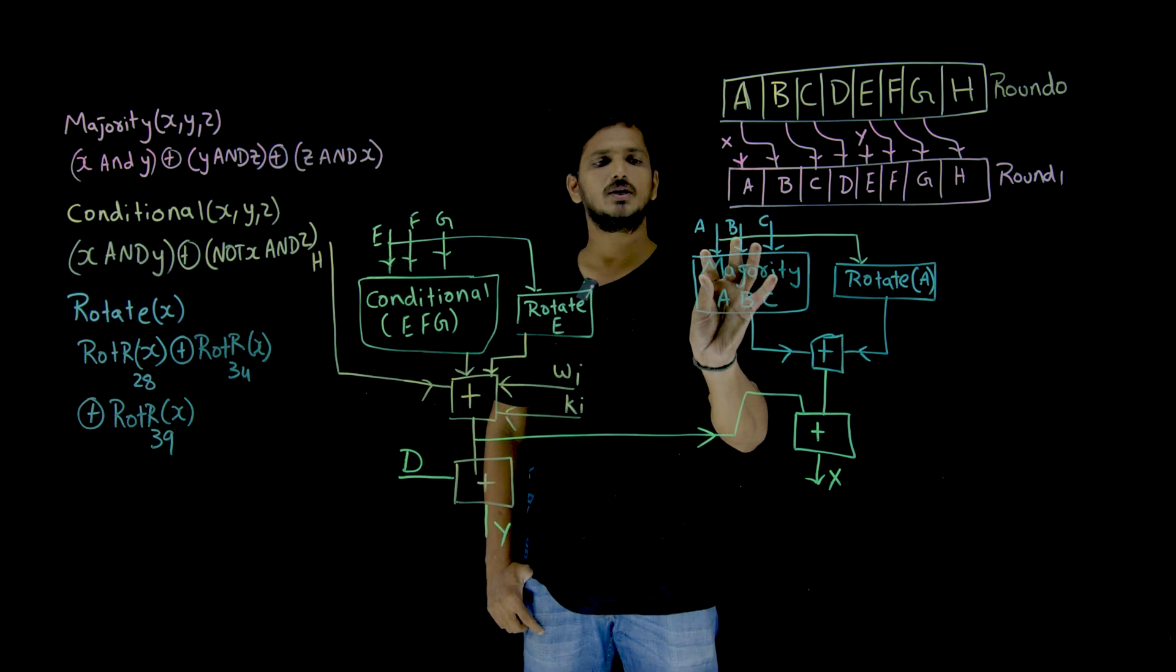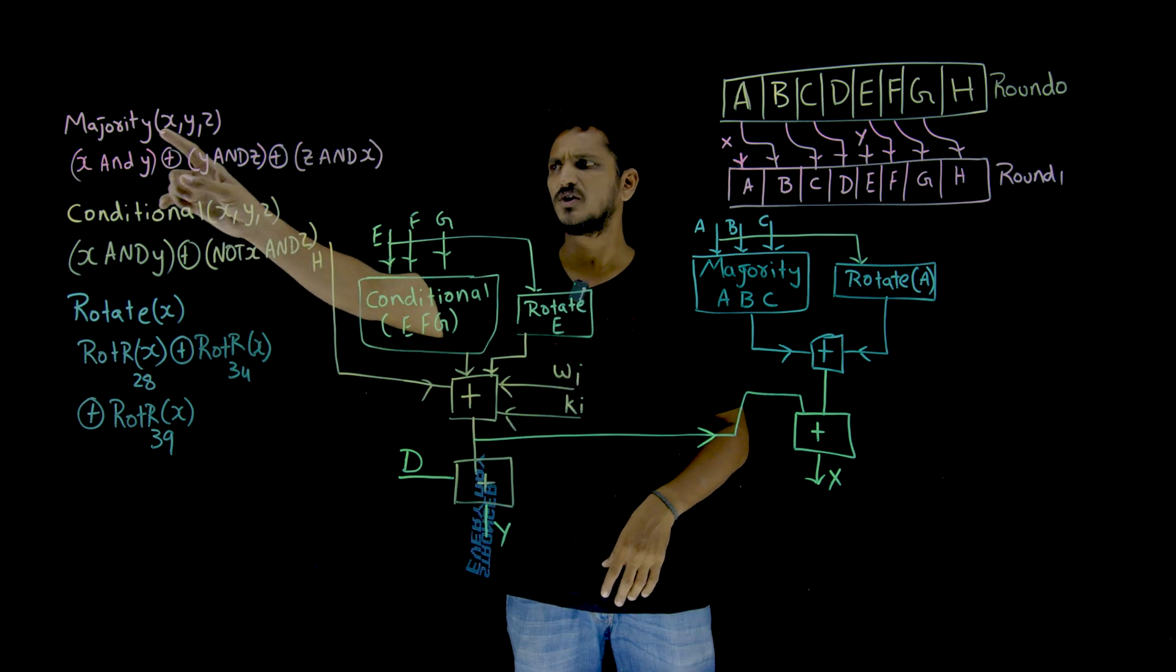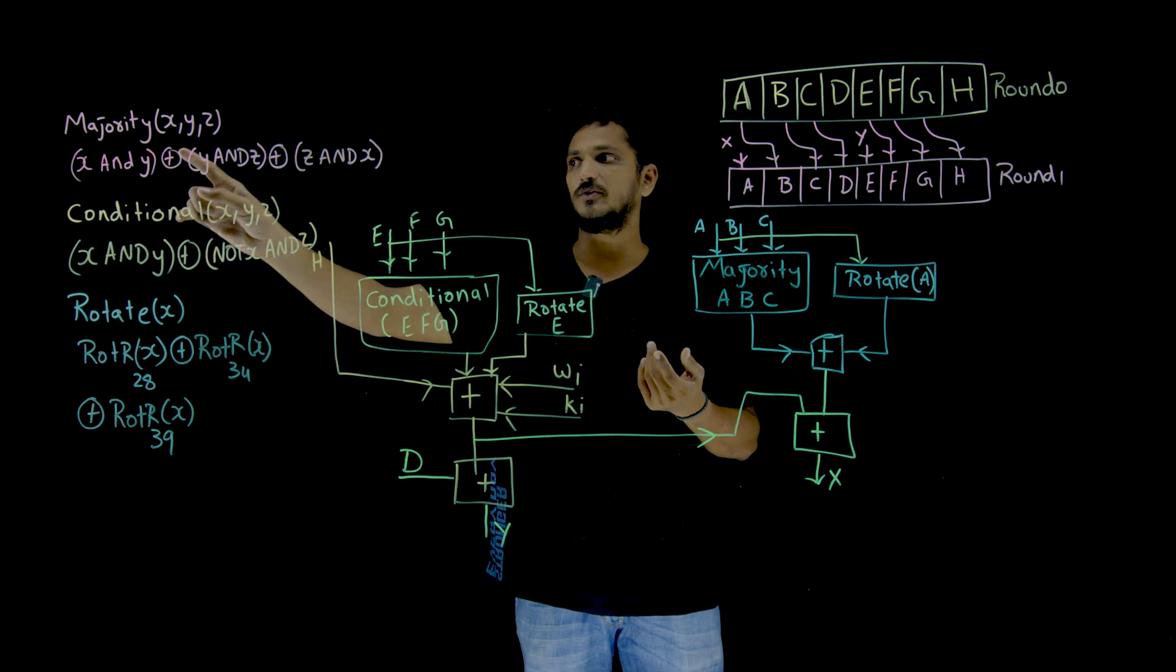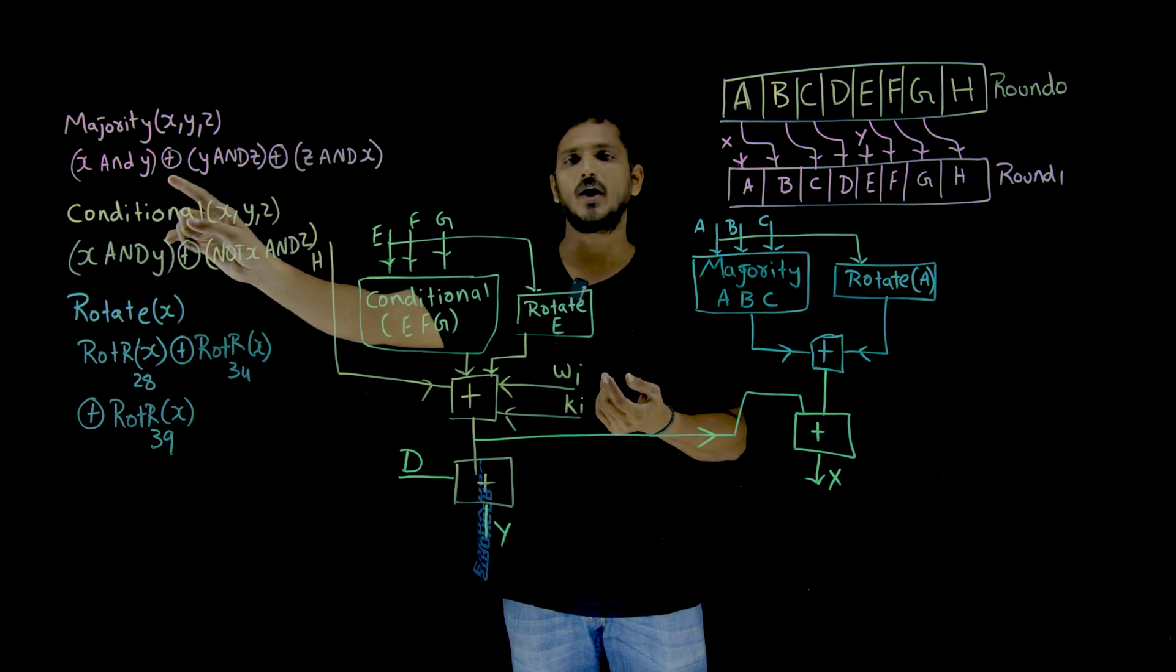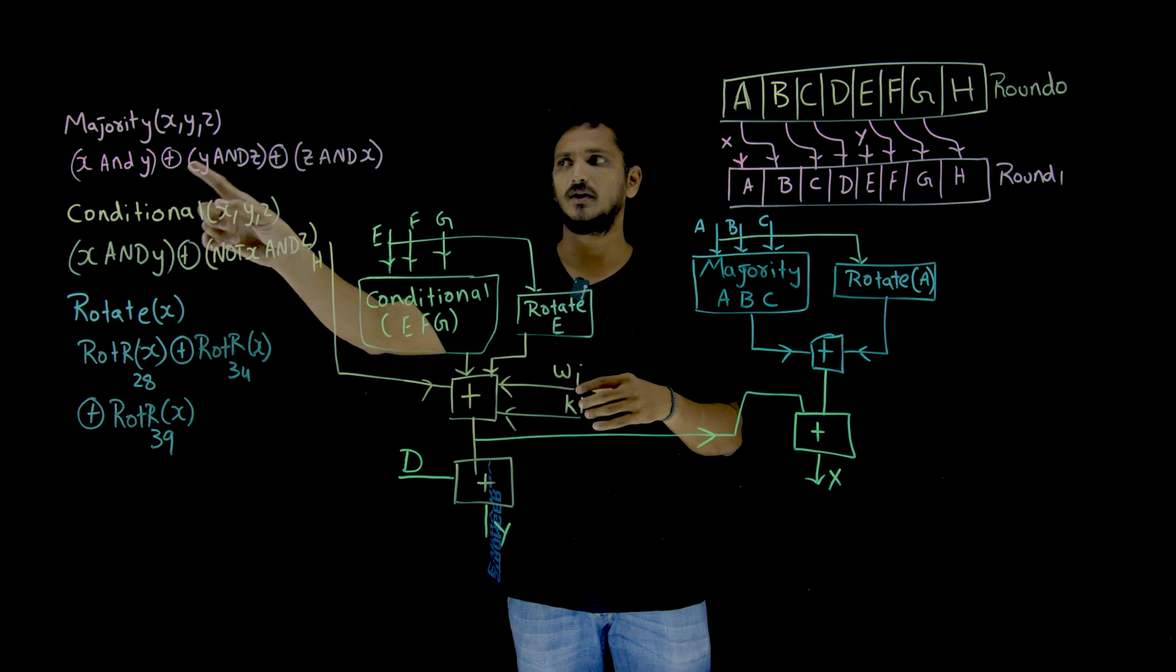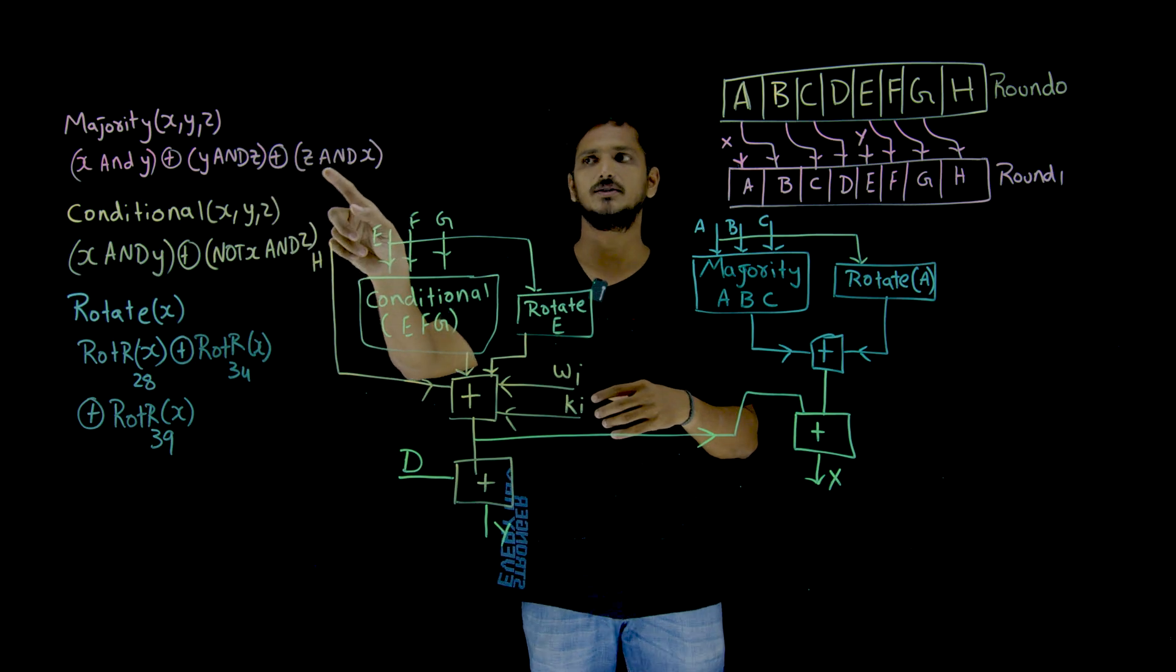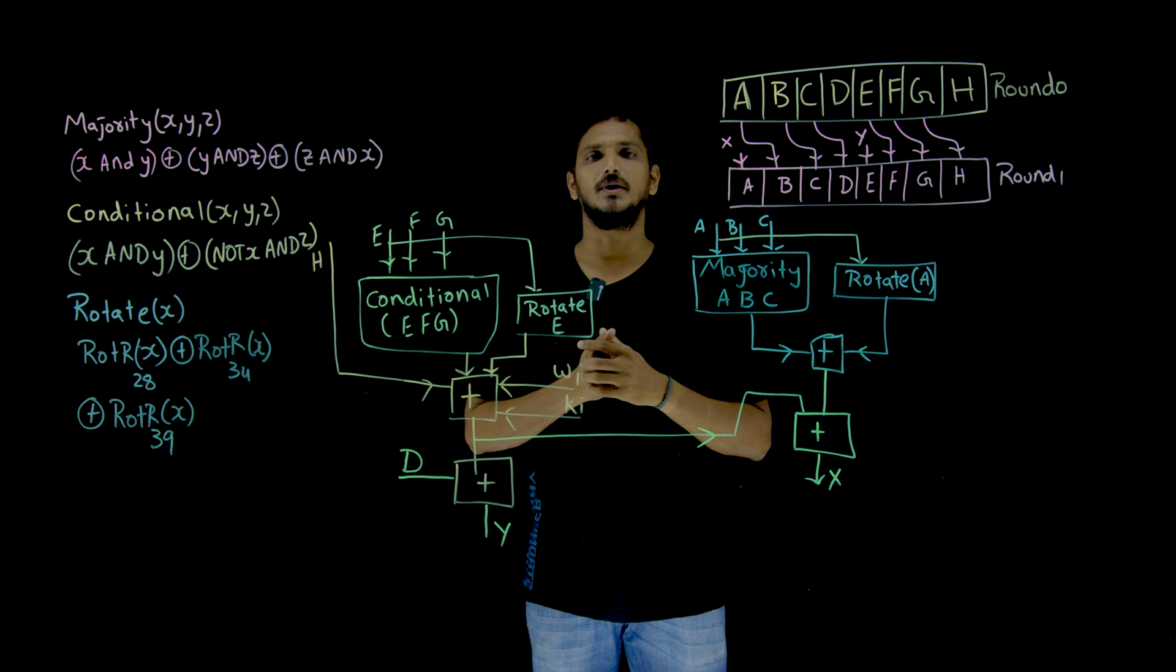Now, let us try to understand what is majority, conditional and rotate values. Majority of X, Y, Z is given as: X is 64 bit, Y is 64 bit, Z is 64 bit. X and Y means bitwise AND operation, XOR, Y and Z means bitwise AND operation, XOR, Z and X. This is what majority function means.